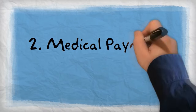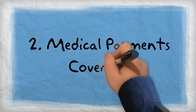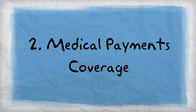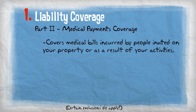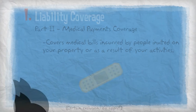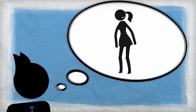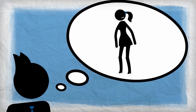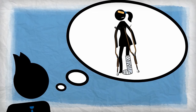The second liability coverage provided in your homeowner's policy is medical payments, which covers medical bills incurred by invited people who are injured on your property or as a result of your personal activities. Remember your injured cookout guest? Medical payments coverage would help cover the cast and stitches they received due to their injuries.